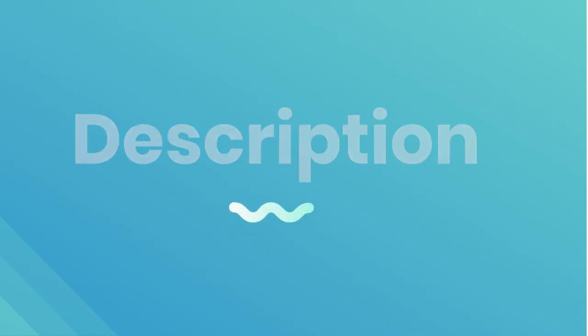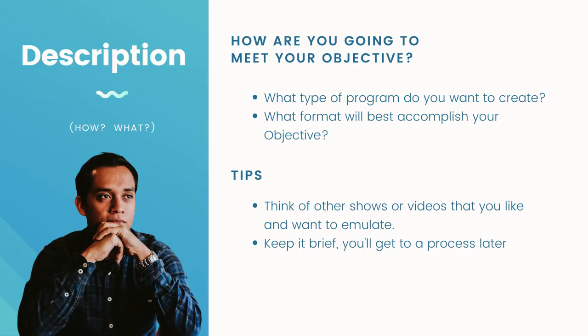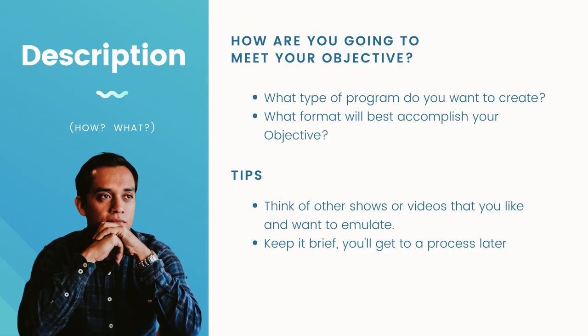Moving on to your description. What type of program do you want to create? Do you want it to be a 30-second promo? Do you want it to be a 30-minute talk show? What format will best accomplish your objective? This is where you get to think about it on your worksheet. Some tips to get the ball rolling: think of other shows or videos that you really like and want to emulate. Keep it brief, and if you want to add details later, absolutely go for it. For your first line of your description, keep it brief so people know what you want to do.